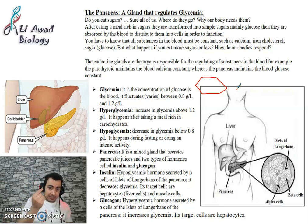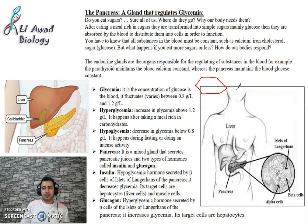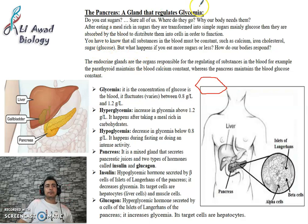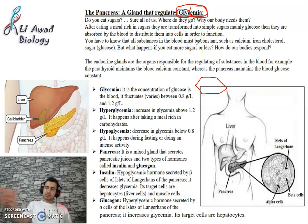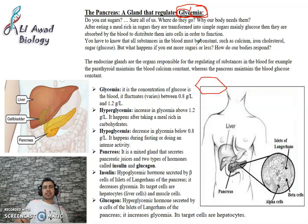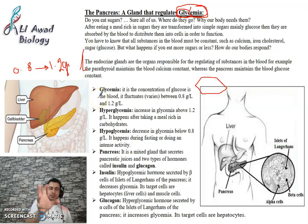The amount of glucose in the blood is called glycemia. Glycemia means concentration of glucose in blood — 'emia' means blood, 'glyce' means glucose. Normal glycemia in humans ranges between 0.8 and 1.2 grams per liter — that is, each liter of blood should contain approximately 0.8 to 1.2 grams of glucose.